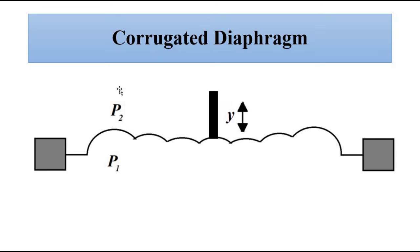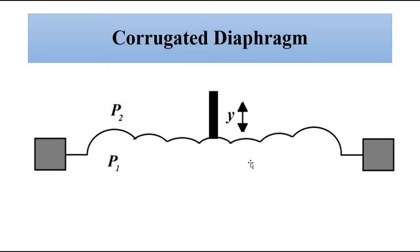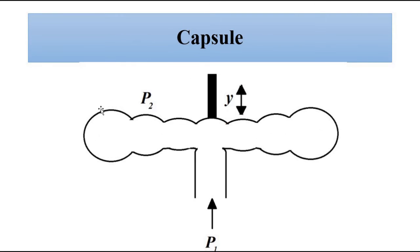The corrugated diaphragm is subjected to pressure on either side. Depending on which pressure is higher, it undergoes displacement: if P1 is greater than P2 it moves upward; if P2 is greater than P1 it moves downward. This is the corrugated diaphragm.